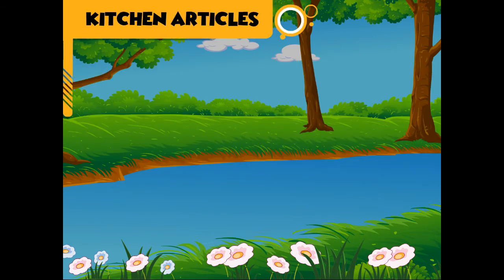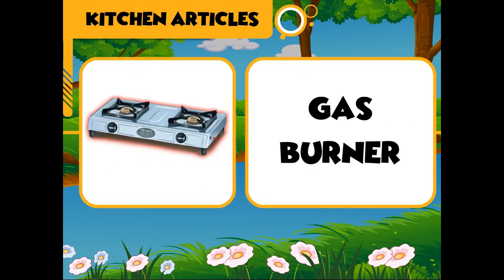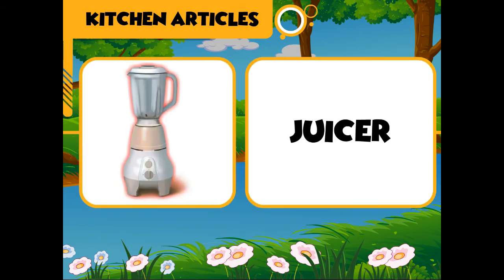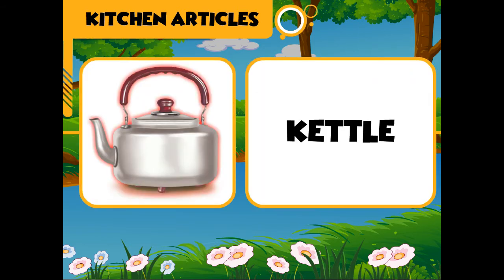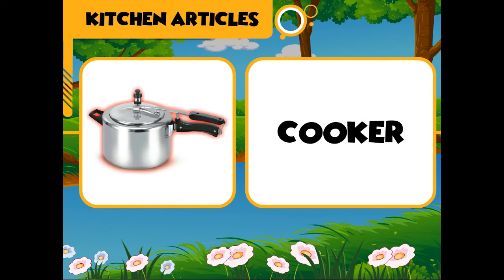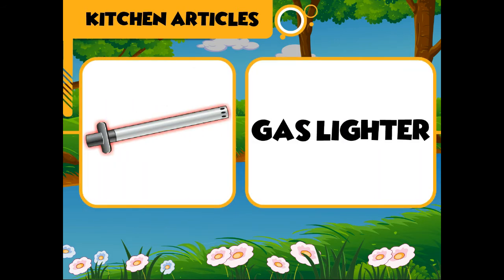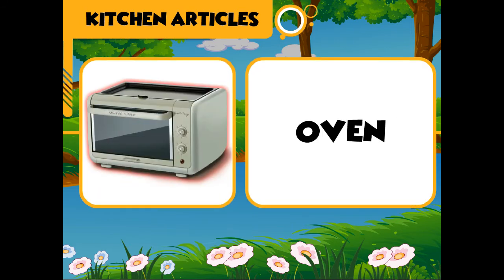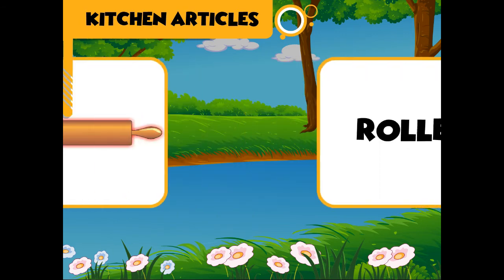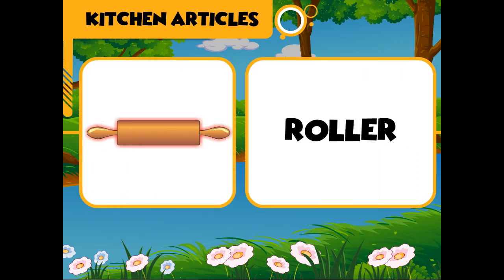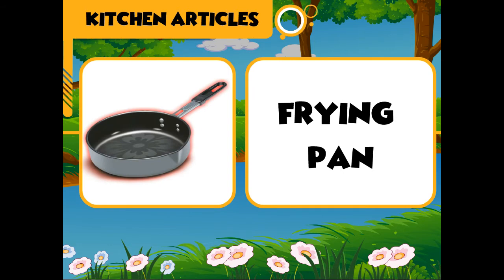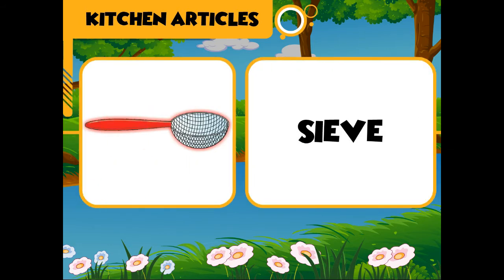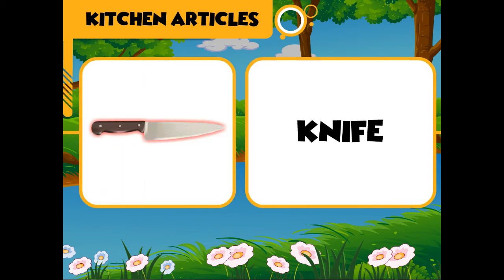Kitchen articles: gas burner, juicer, kettle, cooker, gas lighter, toaster, oven, pan, roller, frying pan, sieve, knife.